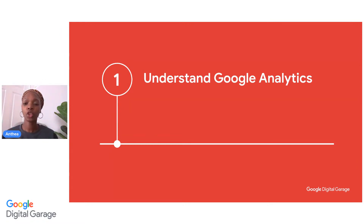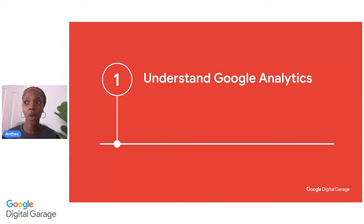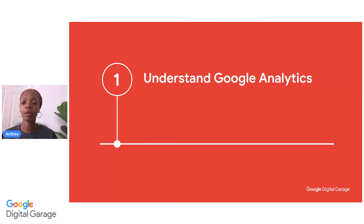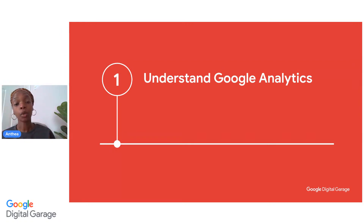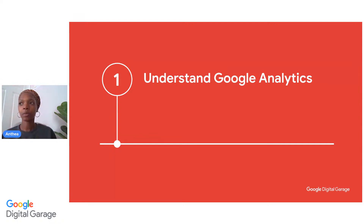Website traffic is usually a key indicator of success. If you have people coming to your website, that's brilliant — it means that people know who you are and where you are. Make sure that you can understand where your visitors are coming from, what they're doing on your website and how long they are staying for. Then use this data to not only improve your website, but also to improve your marketing strategy, which will essentially lead you to more sales or more sign ups.